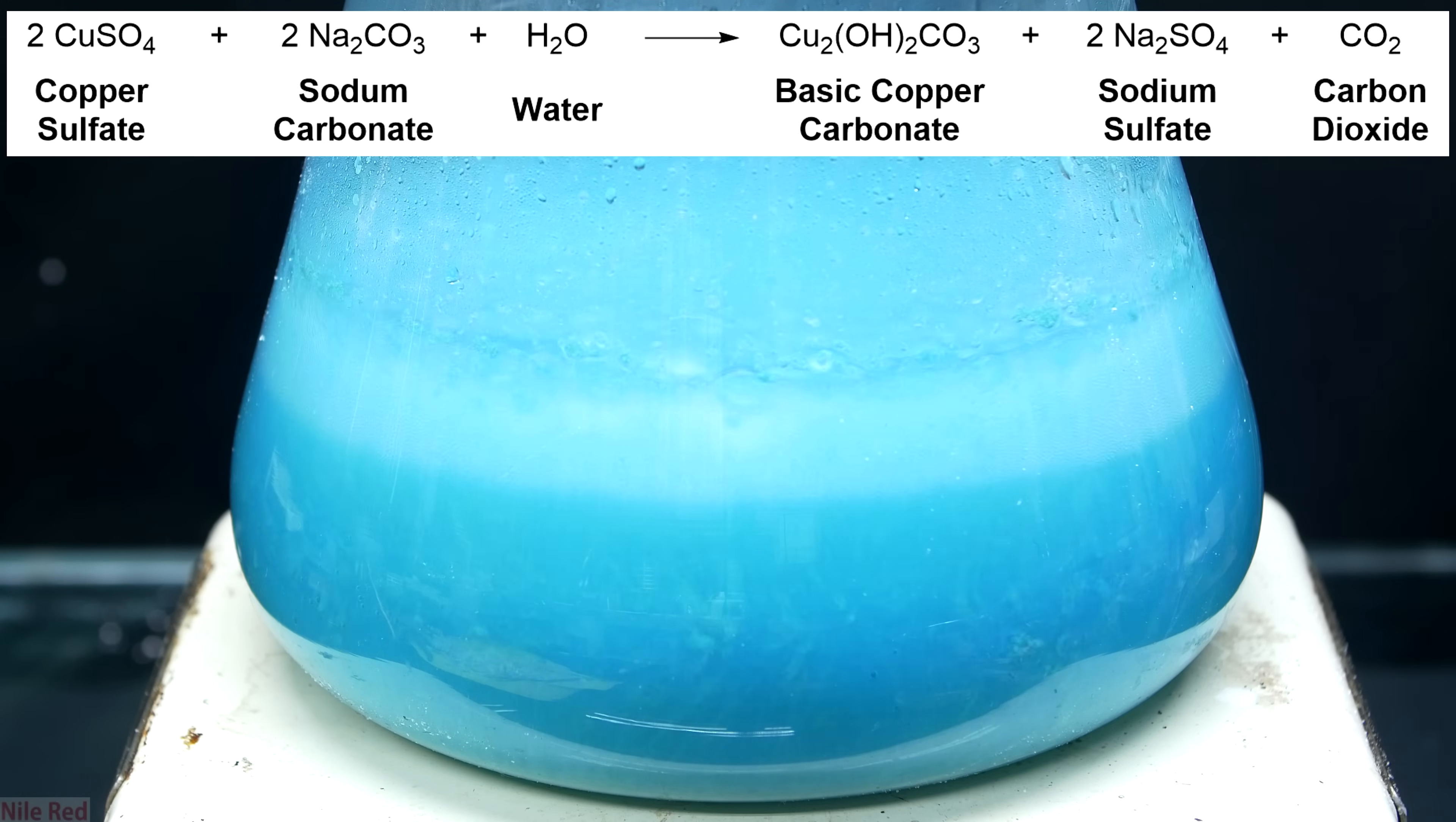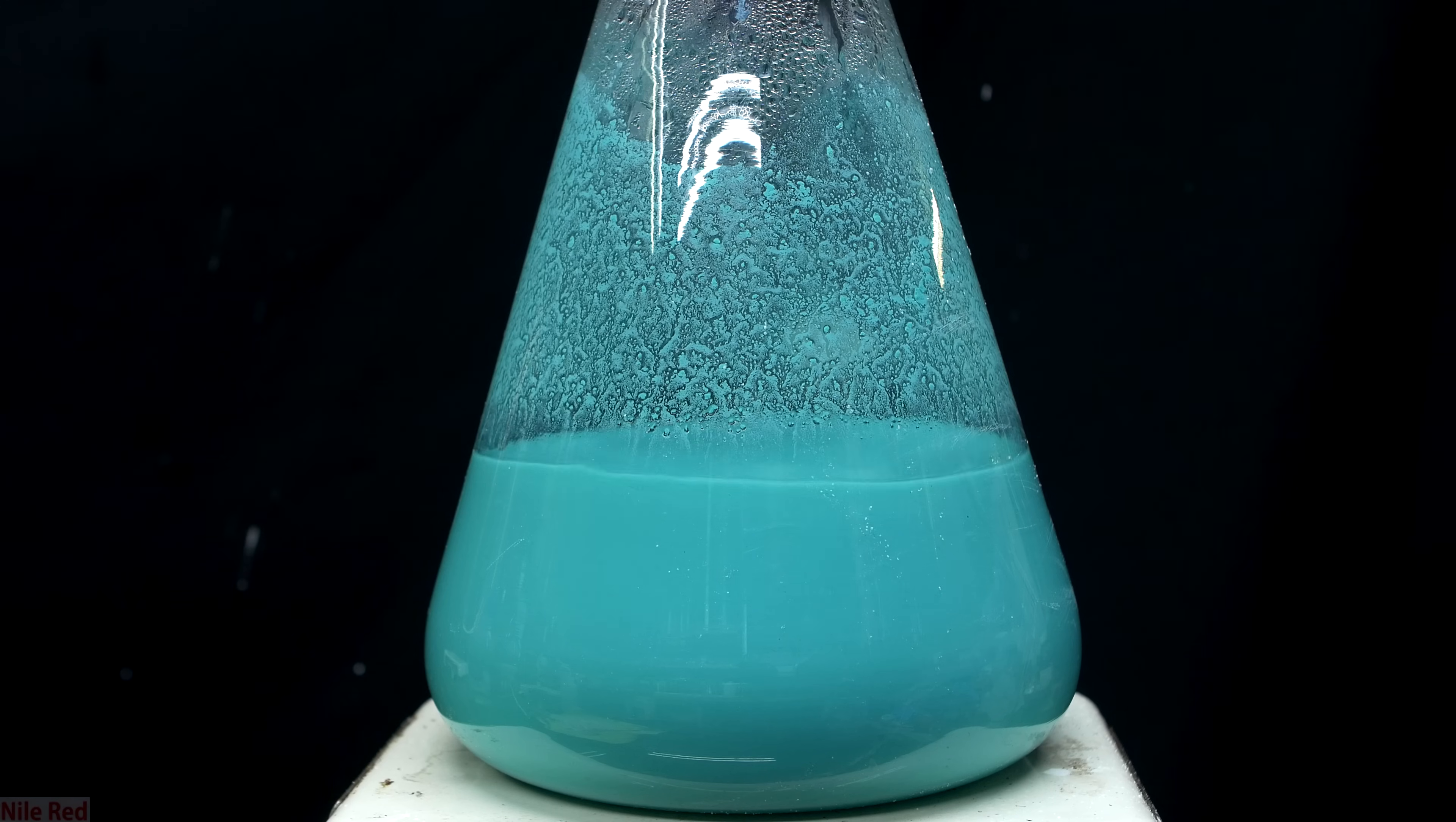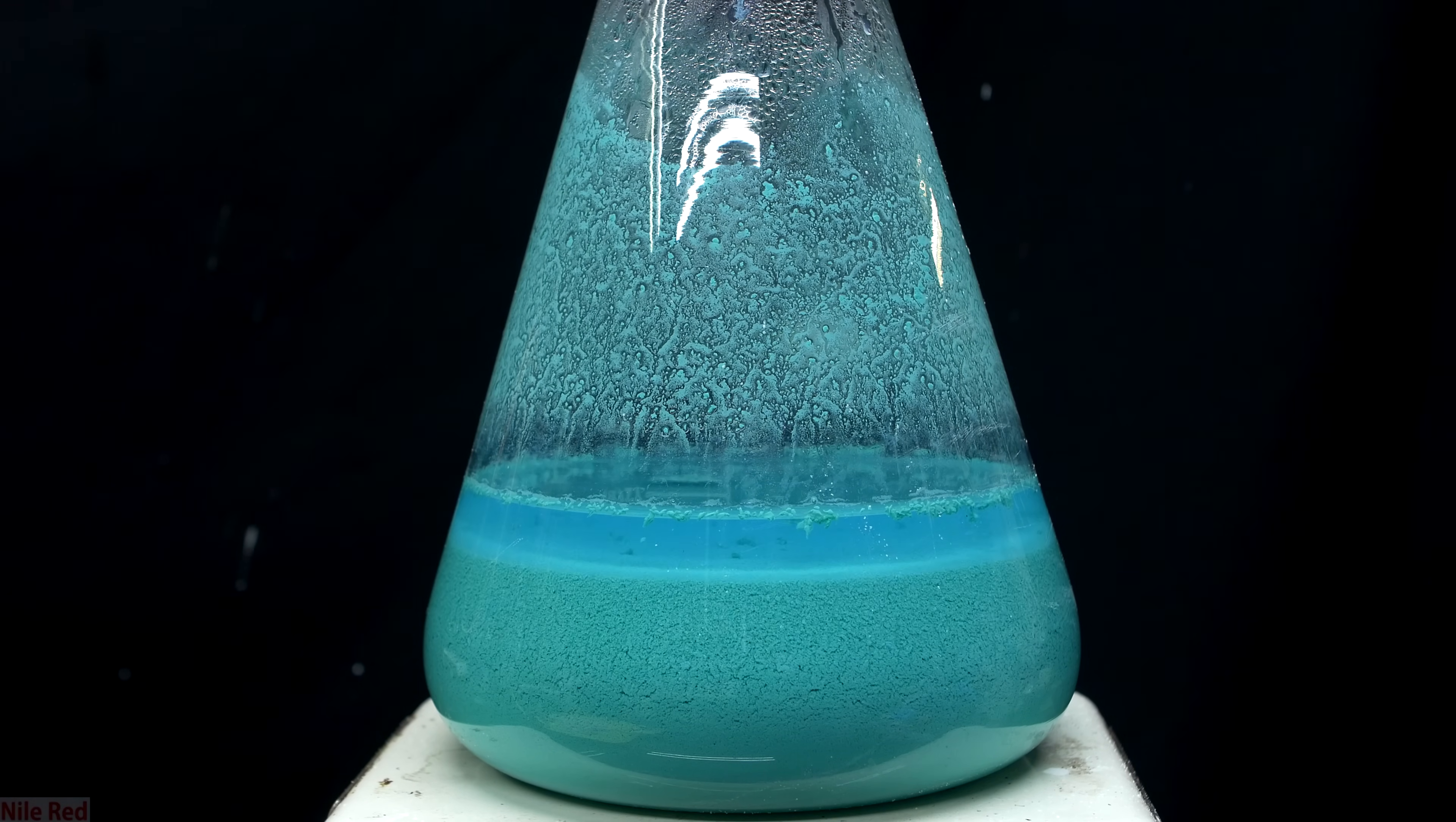I purposely added the sodium carbonate slowly and in small portions to prevent the reaction from foaming out of the flask. Each time the bubbling seemed to be slowing down, I added a little bit more sodium carbonate. After all of the sodium carbonate had been added, I mixed it around and then I let it sit there for a few hours. Very quickly after putting it down on the hot plate, you can see the copper carbonate starting to sink to the bottom. I actually thought it looked kinda cool where copper carbonate was sinking down, but CO2 bubbles were floating up.